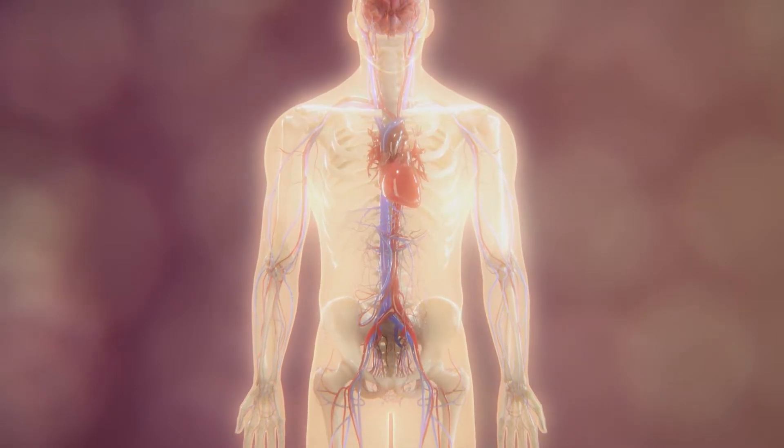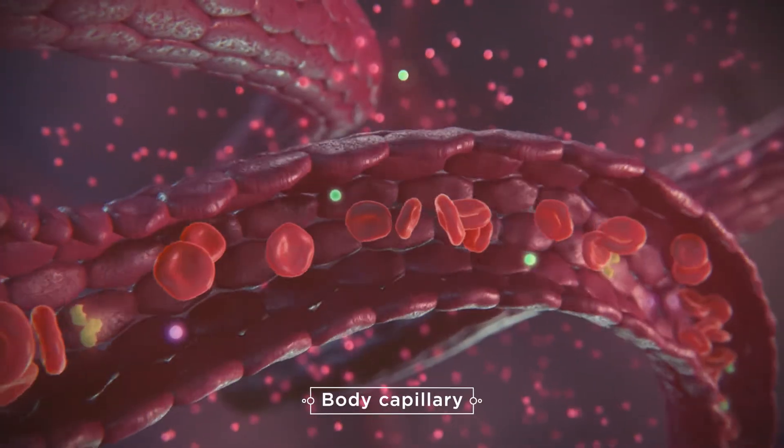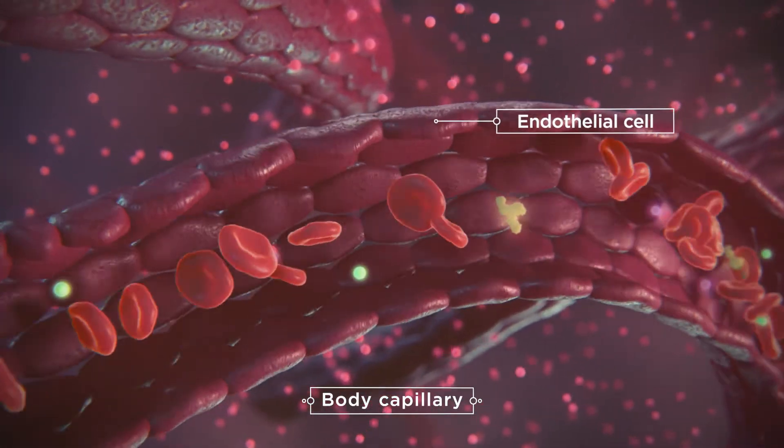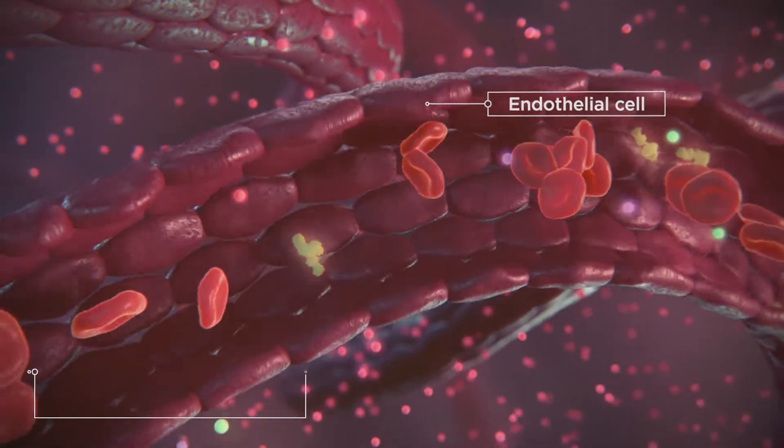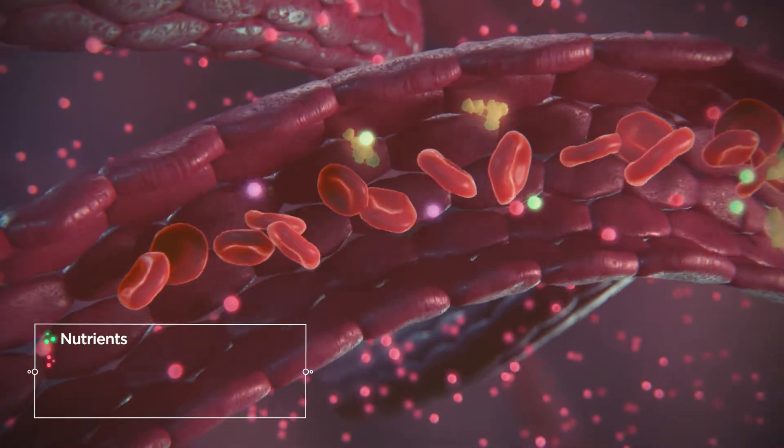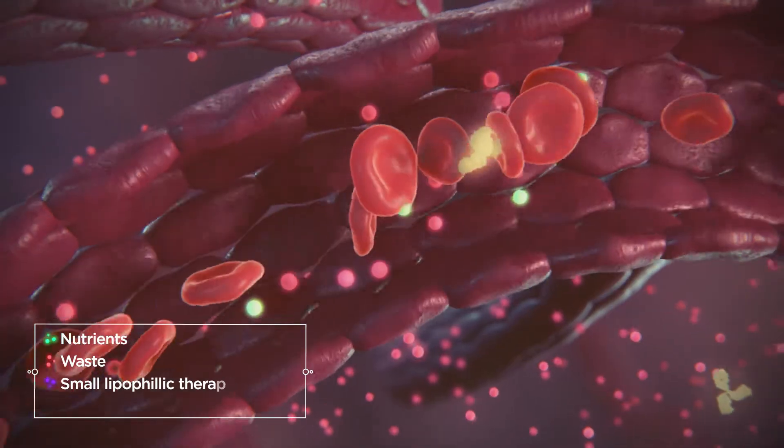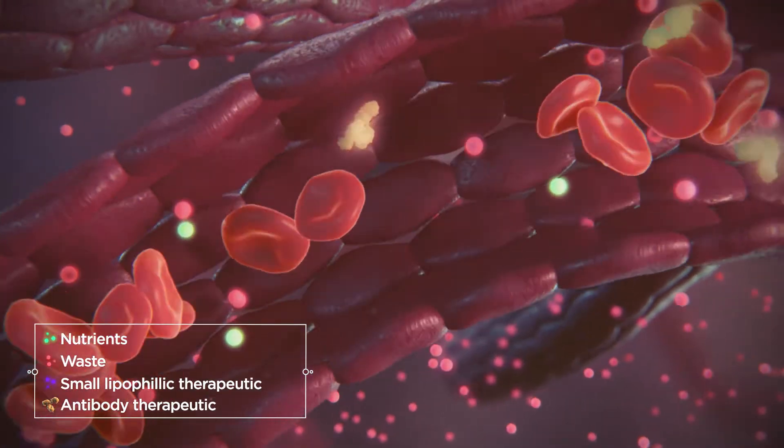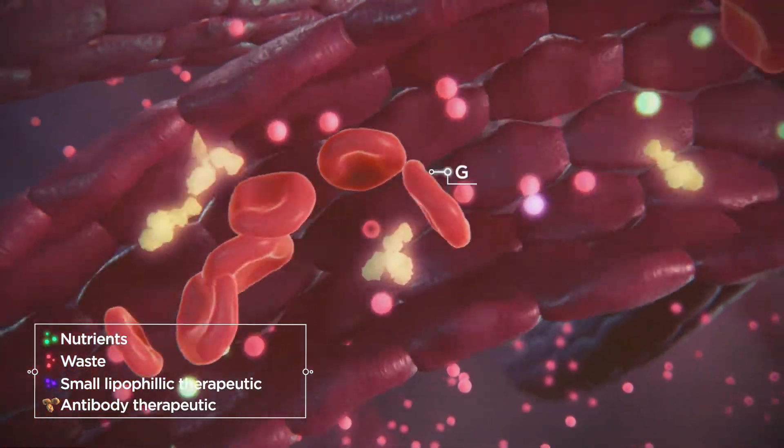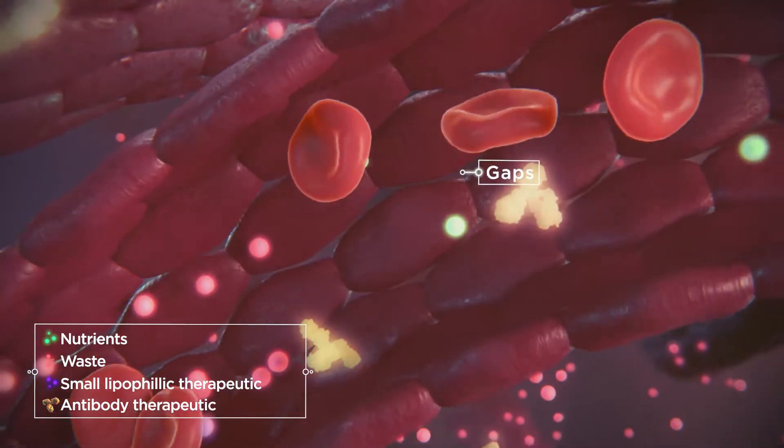The smallest blood vessels in the body are called capillaries, which are made up of endothelial cells. Capillaries are responsible for exchanging nutrients, waste, and other molecules in the blood with tissues throughout the body. This exchange mostly happens through gaps between endothelial cells.